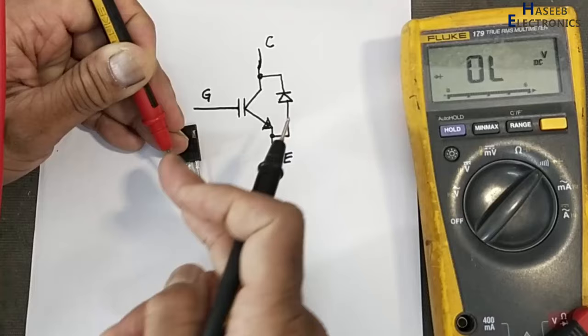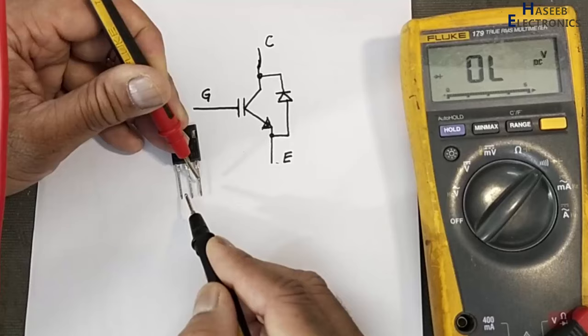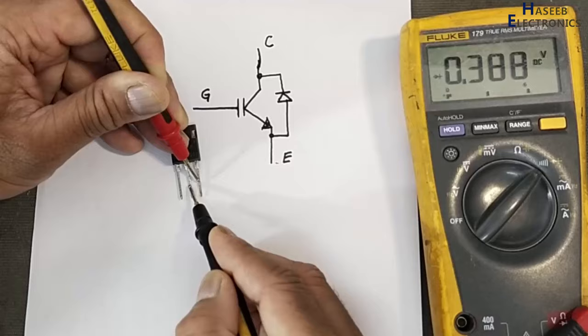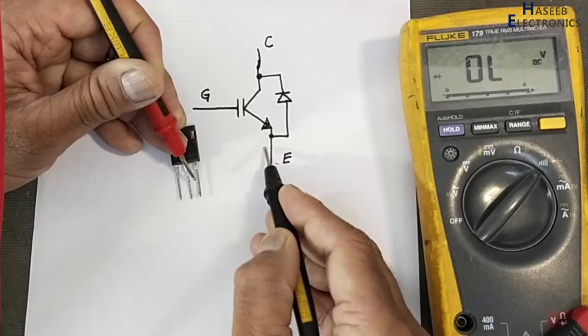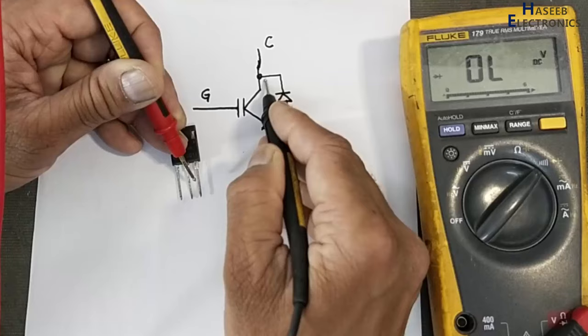Now reverse the leads. In this direction, 0.388—that is this diode path and also this path. Before this, 0.393, but now we have two paths in parallel.